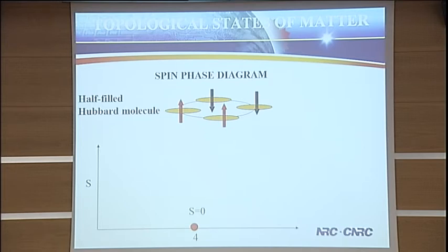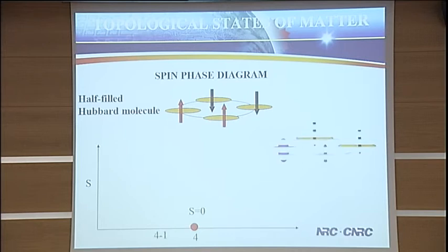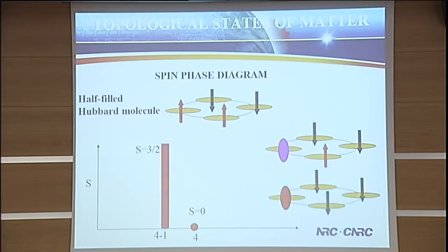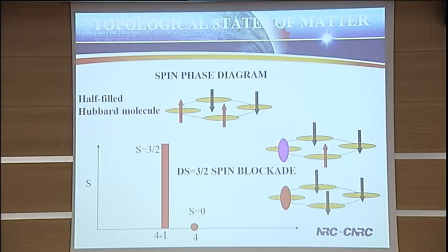How can we see this in transport? If we take a half-filled molecule, the total spin is equal to zero. When we remove one particle, something rather amazing happens — all electrons become spin polarized. This is the ground state, so the spin is large. The difference in spin is larger than the spin of a single electron, so we can't add a single electron — there would be a spin blockade in such a structure. So if you wanted to generate a spin blockade, you now know how to do this.